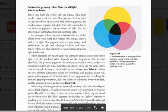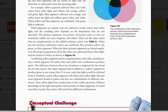So let's read Figure 20. The combination of the subtractive primary colors by any two filters produces a complementary color of the third subtractive primary color. Combining yellow pigment and its complementary color blue should produce a black pigment, yet earlier blue and yellow were combined to produce green. The difference between these two situations is explained by the broad use of color names.